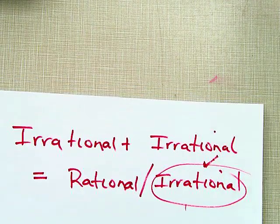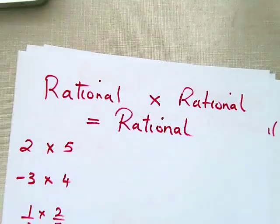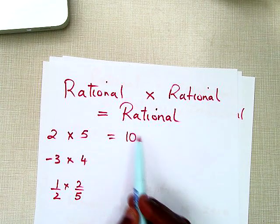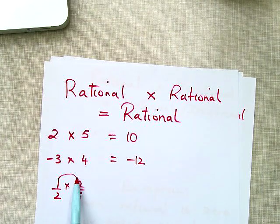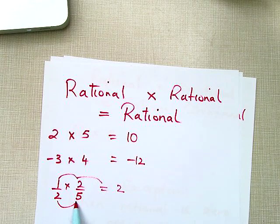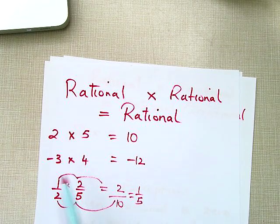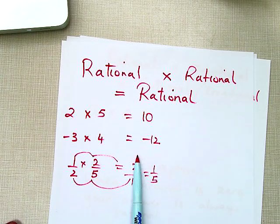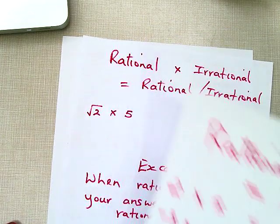That takes care of all the additions. Let's go to the products or multiplication. If you multiply rational times rational, what can you expect? Always rational. Examples: 2 times 5 is 10; negative 3 times 4 is negative 12. With fractions, numerator times numerator gives 2, denominator times denominator gives 10, which simplifies to 1/5 — still rational. Rational times rational is always equal to rational.